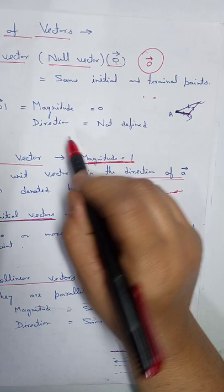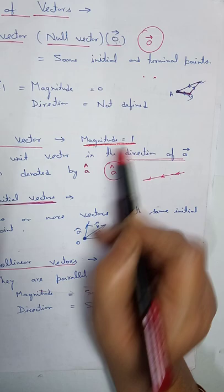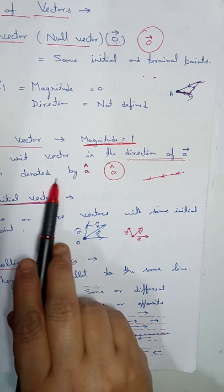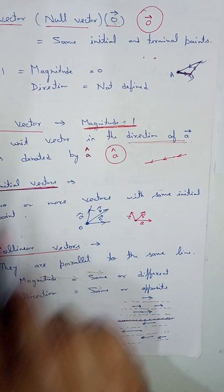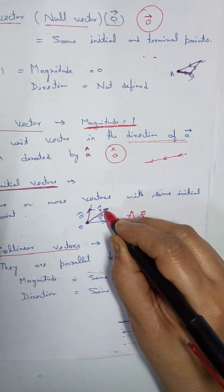Next is the unit vector — its magnitude is always one, and its direction is always in the direction of that vector. The unit vector in the direction of A is denoted by A-cap. Co-initial vectors are two or more vectors with the same initial point — for example, if from point O one vector goes here, another goes there, all have the same initial point O.